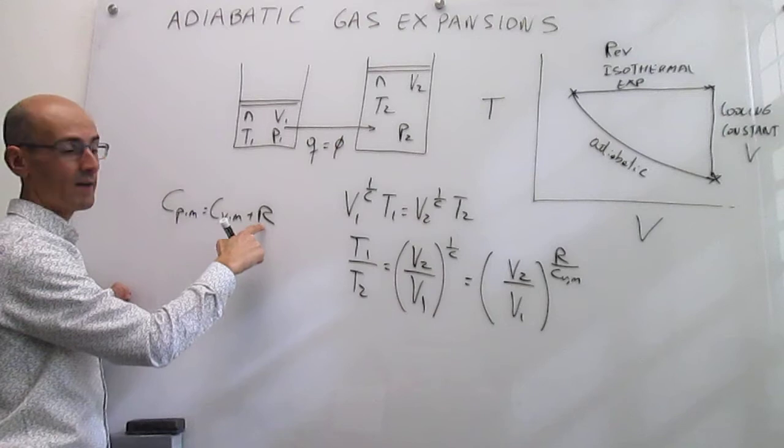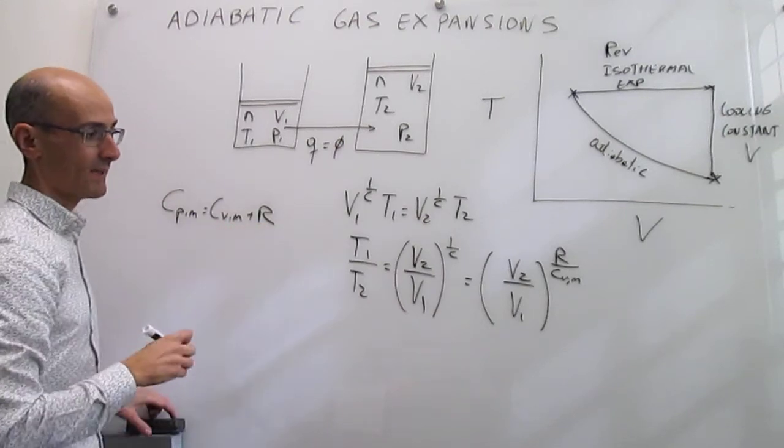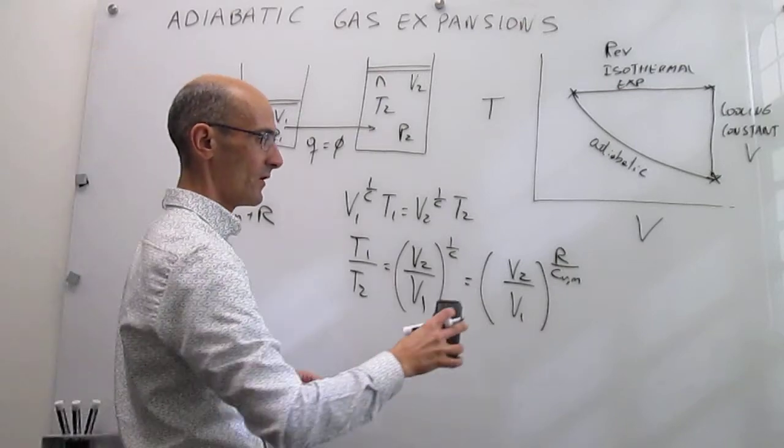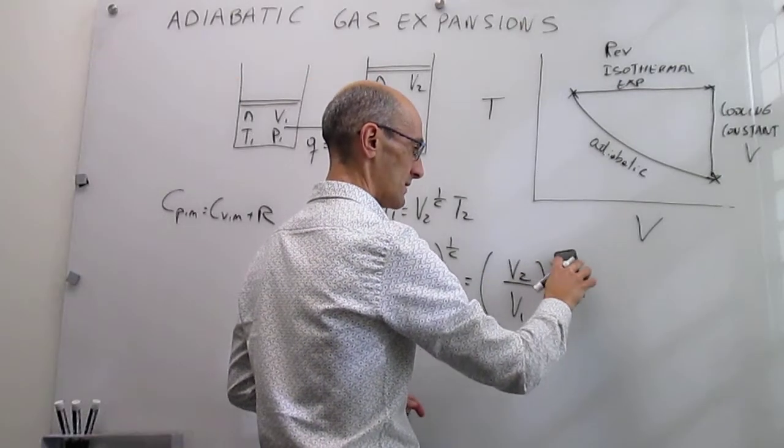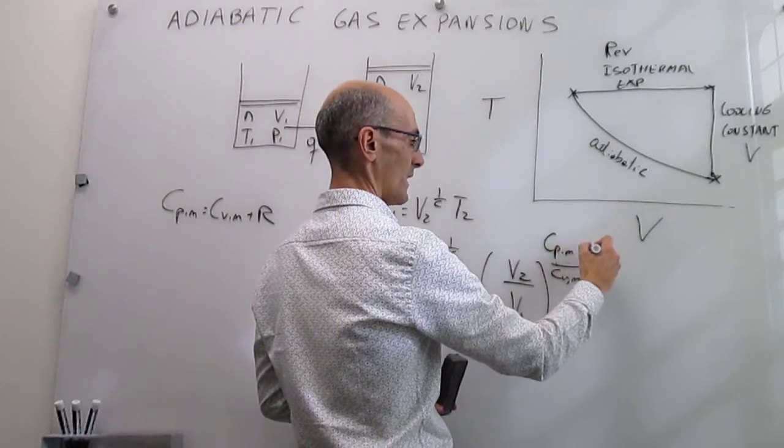Notice that R is simply the difference between the heat capacity at constant pressure and the heat capacity at constant volume. What we can actually do is simply replace that R by C_Pm minus C_Vm.